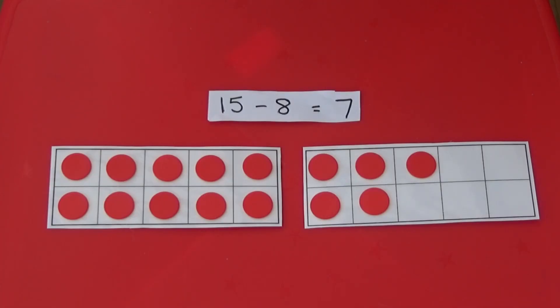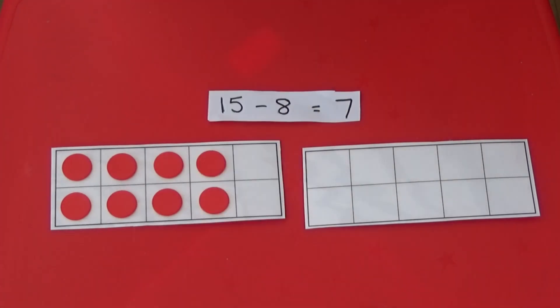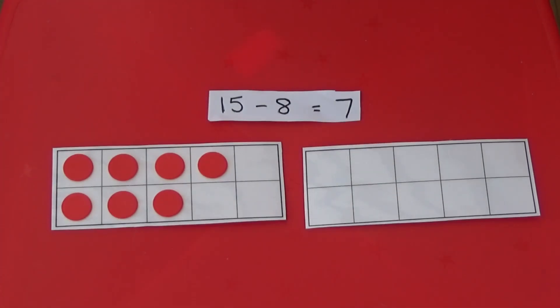We can also use counters and tens frames for subtraction. Here I have fifteen counters. If I take away eight counters, I am left with seven counters. So, fifteen take away eight is seven.